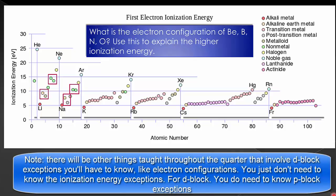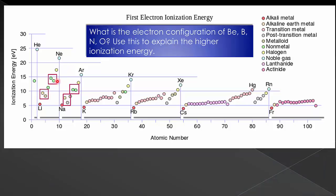So why would this reversal of the trend happen at beryllium and boron, as well as nitrogen and oxygen?